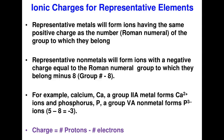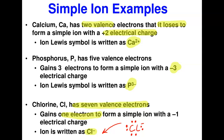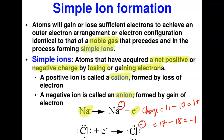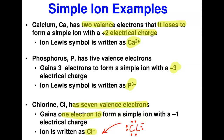I want to show how to write the electron gain or loss process. For calcium: initially we have two dots. The electrons lost are shown after the arrow for metals. Calcium loses two electrons, becomes Ca²⁺, and the two electrons are released. For nonmetals, the electrons gained are shown to the left of the arrow.